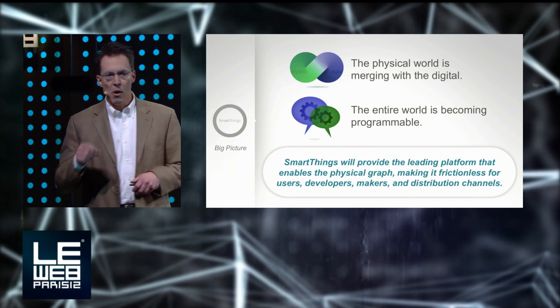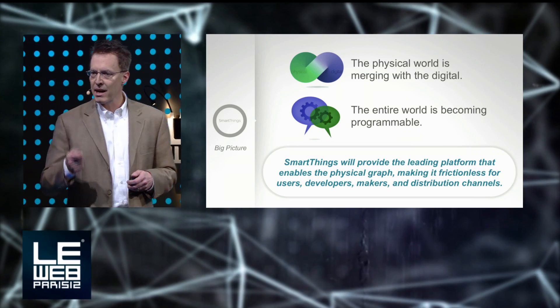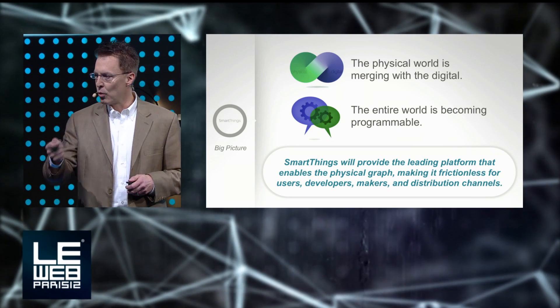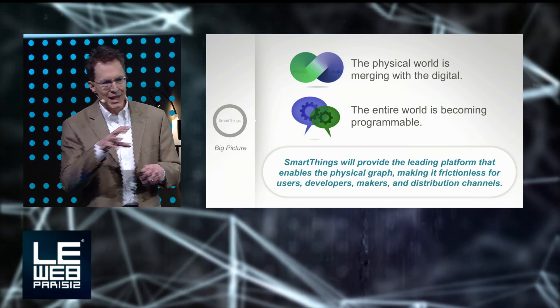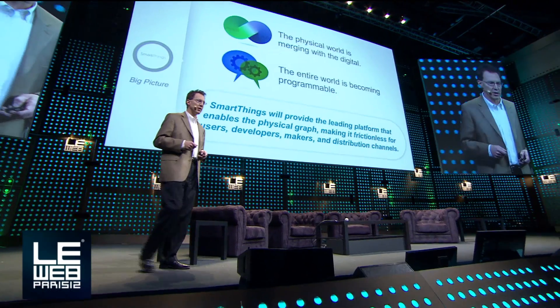We call that the physical graph. Done correctly, it will allow us to make the physical world programmable. When we interact with the virtual representation of a device or a thing, the physical world will change in response. And when we interact with the physical world, the virtual representation will also change in response.